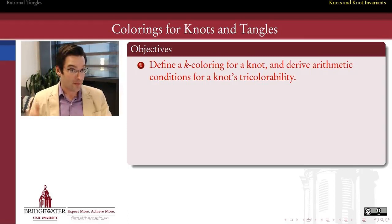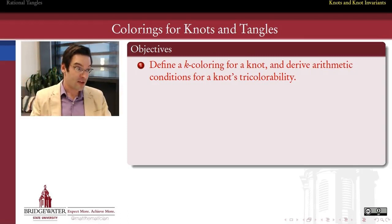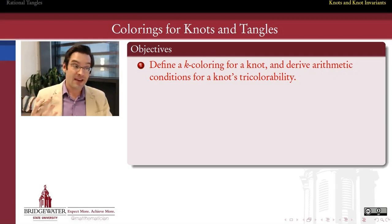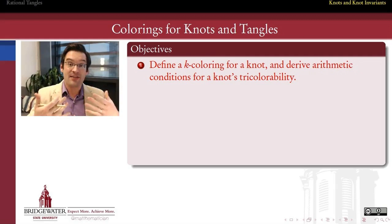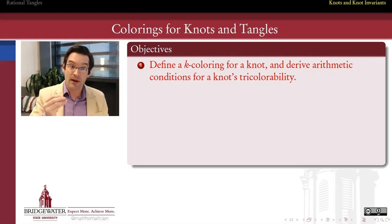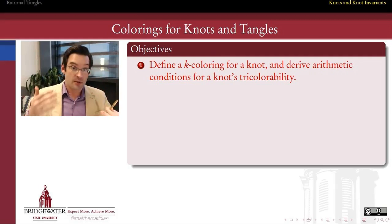So get out your Crayola because it's time to start coloring knots. In this video, we're going to look at what the definition of K-coloration is, how to color a knot using K colors, and we're going to take that definition and realize it as an arithmetic and then as an algebra problem. And that's going to give us the hook into thinking about how colorations lead to higher algebraic structures that we hope will be complete invariants for knots.